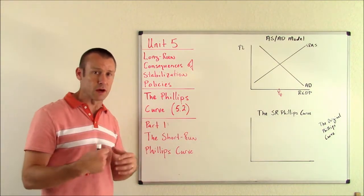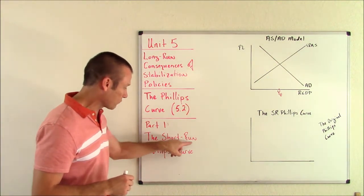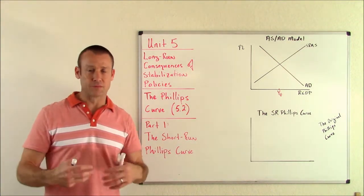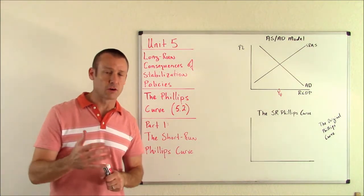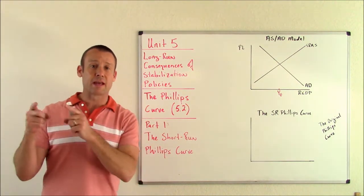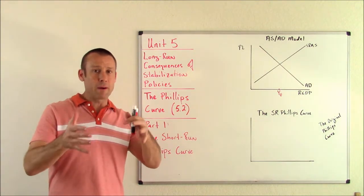We're going to have a few videos on 5.2. In this video we're talking about the short run Phillips curve. First of all, what is the Phillips curve? The Phillips curve is a curve to illustrate the relationship between the inflation rate and the unemployment rate.